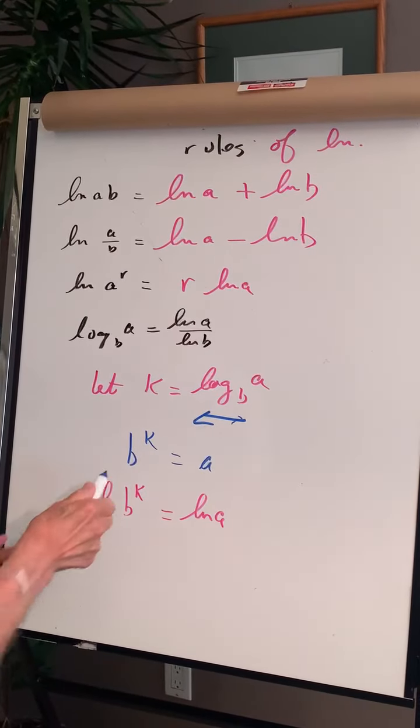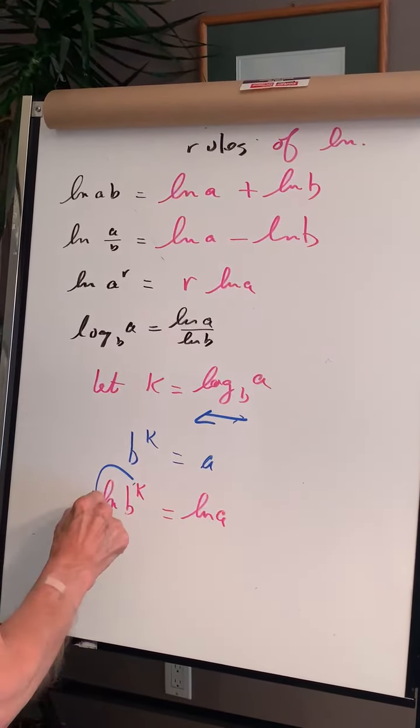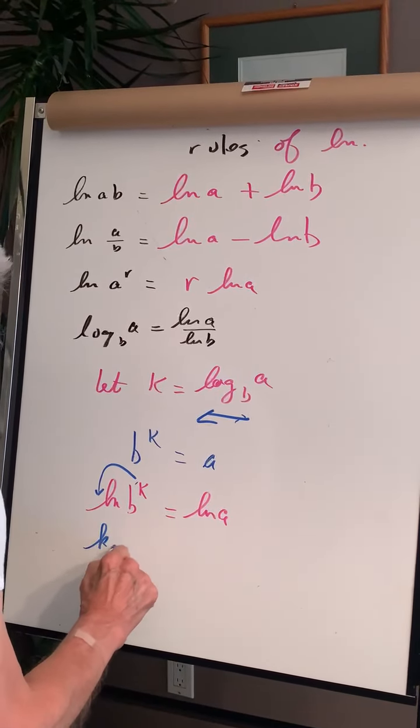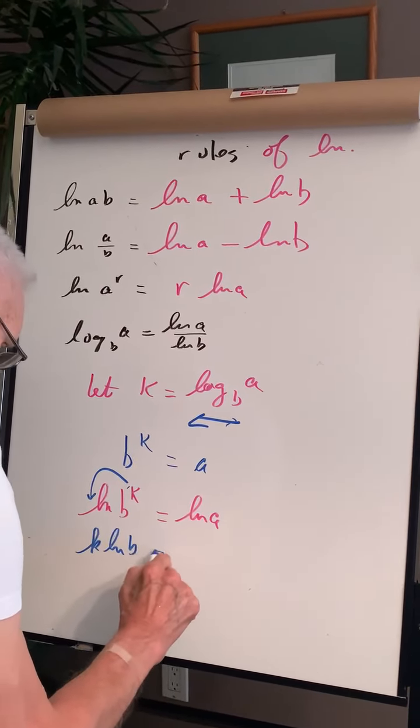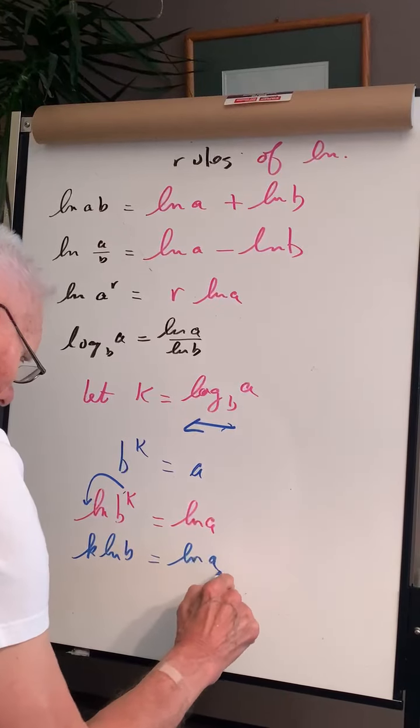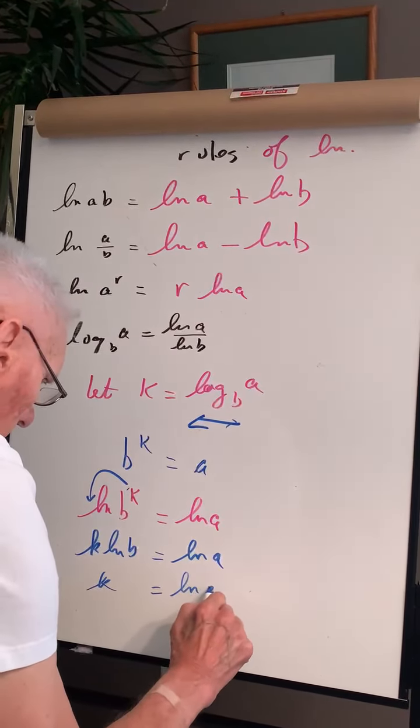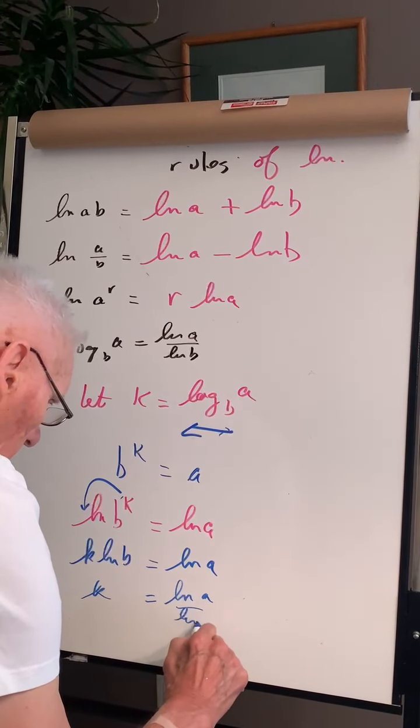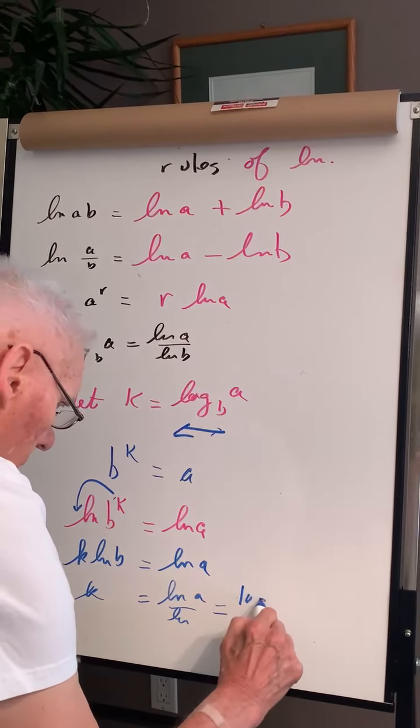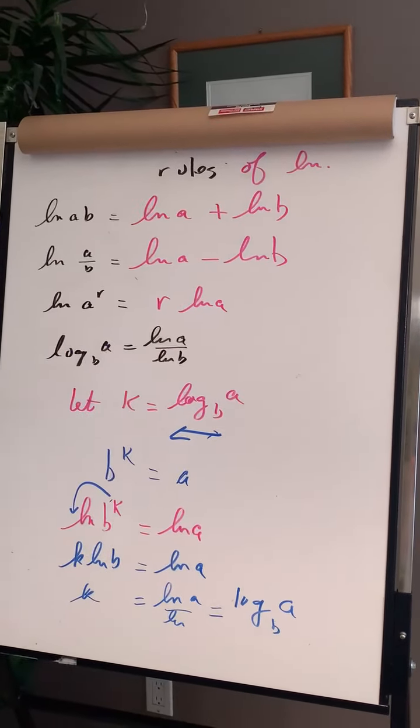Now let K move over and become K ln B equals ln A. Therefore, K is ln A over ln B, which is the log base B of A.